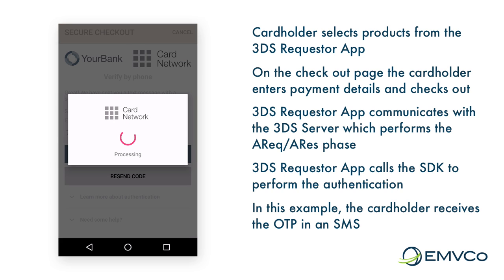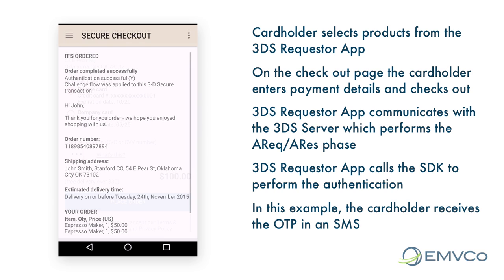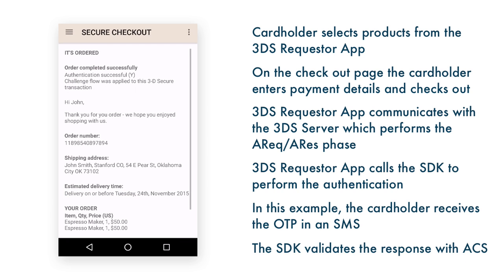The OTP code entered is then communicated with the ACS, and the ACS is able to determine if the authentication was successful. The ACS then provides the results of the authentication via the results request message back to the 3DS Requester application.